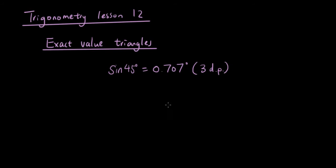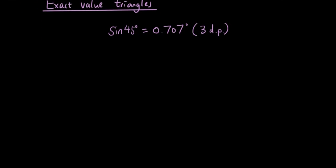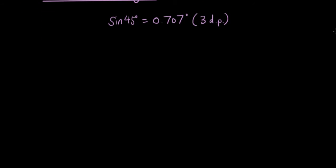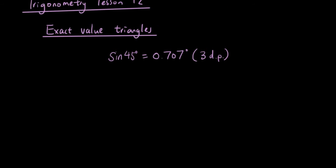Now there is no way to express this number other than to round it. So when we say what sine 45 is, a lot of people write 0.707 and say round it to 3 decimal places. Now that is okay, but if you were a mathematician or an engineer and you want to be really accurate with trigonometry, we like to express this number as what we call exact value.